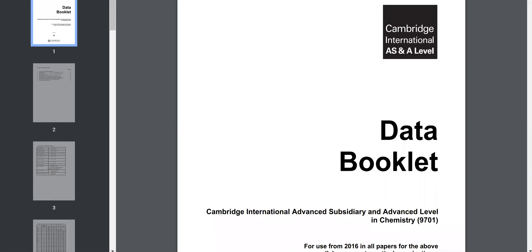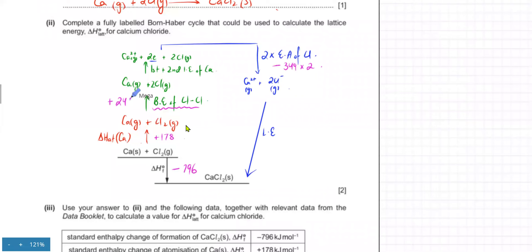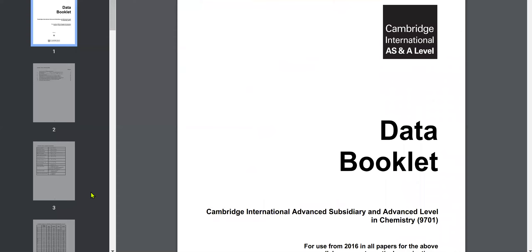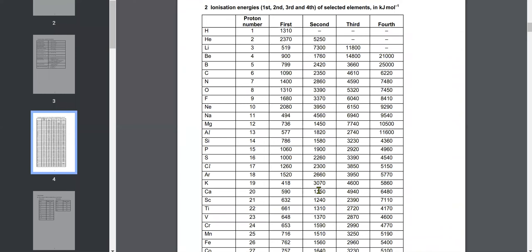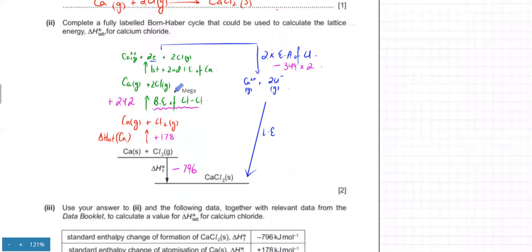You also need the first and second ionization energies of calcium. The bond energy is not multiplied by two because you're only breaking one bond — you get two Cl atoms but only break one bond, so be very careful with quantities. From the data booklet, calcium's first ionization energy is 590 and the second is 1150 kJ/mol. Now we have all the values; the only missing value is the lattice energy itself.